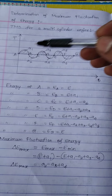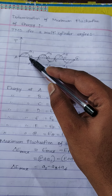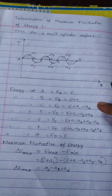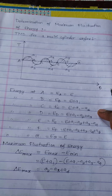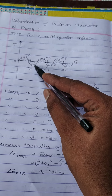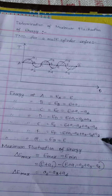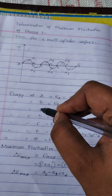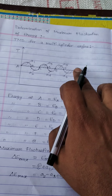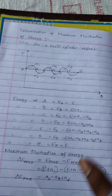At point A, the energy is E. At point B, the energy is E plus A1, where A1 is the positive energy area. At point C, the energy is E plus A1 minus A2, because A2 is a negative energy area. A3 is positive and A4 is again negative, A5 is again positive. Finally, at point G, the energy equals the energy at point A because the cycle is completed and a new cycle starts. So for one cycle in a multi-cylinder engine, we have these energy fluctuations.